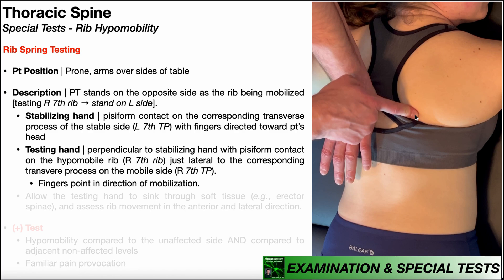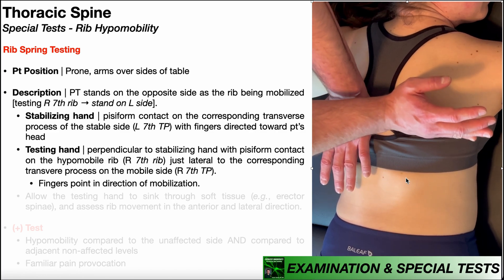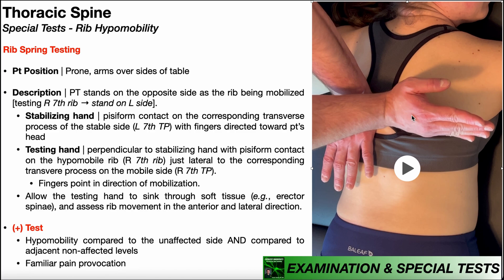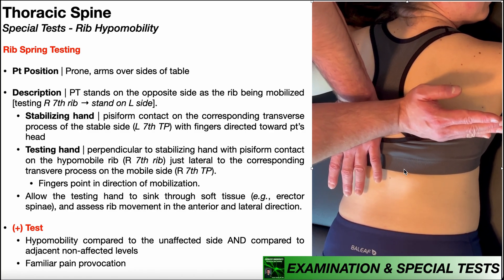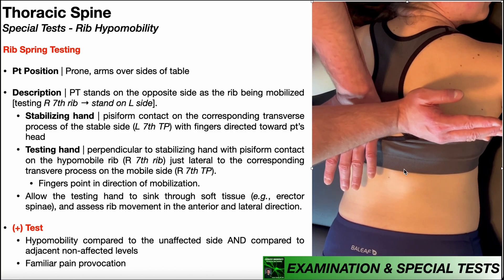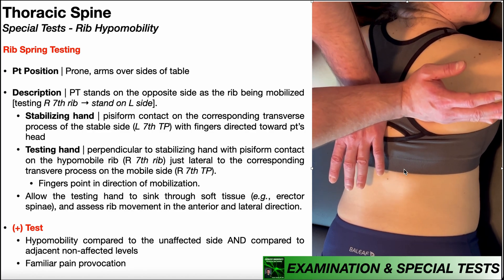My finger pointed at the most prominent aspect of that rib — where it came most superficially — and then as I go more medially, it dips back underneath the erector spinae muscle group. The contact point with my pisiform is right where it goes underneath the erector spinae muscles, just lateral to the right transverse process. Once you have this positioning, you allow the testing hand to sink through the soft tissue — through the erector spinae muscles — to contact that rib. Then you assess rib movement by trying to move it in the anterior and lateral direction. Fingers point in the direction of the test. We can then move up a level and test rib six.